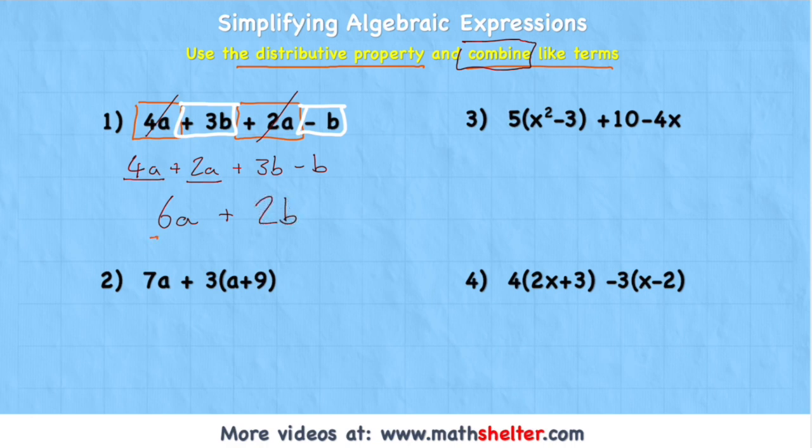So our simplified expression is 6a plus 2b. Now this 6a plus 2b has exactly the same value as this original expression. They are equivalent. It's just a simplified version.